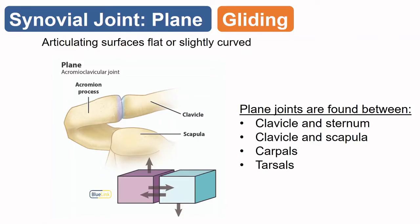The first and least mobile synovial joint is a plane joint, where two flat surfaces are rubbing up against one another. They don't produce significant movement, but there is some gliding between the surfaces. We'll talk more about where we find plane joints as we get into the regional anatomy.